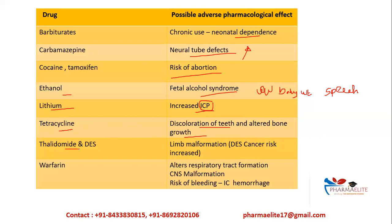Thalidomide is associated with the famous thalidomide tragedy. Thalidomide was given to pregnant women to manage nausea during surgeries and deliveries. However, it was observed that it caused limb malformation — all babies born during that period had malformations such as phocomelia, bone hypoplasia, or absence of limbs. This was the major adverse effect of thalidomide, and its use was subsequently banned and withdrawn.